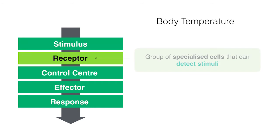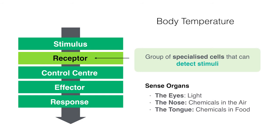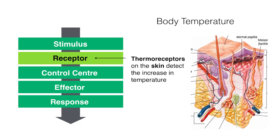Next is the receptor. Like an antenna, a receptor consists of a group of specialized cells that can detect stimuli and changes in the internal and/or external environment. These are found in our sense organs. The eyes can detect light, the nose can detect chemicals in the air, and the tongue can detect chemicals in food. Going back to body temperature, thermoreceptors on the skin detect the increase in temperature. Once any change is detected, the receptors communicate this to the brain using nerves.